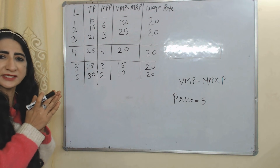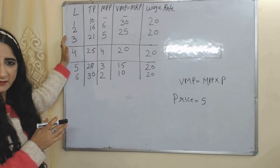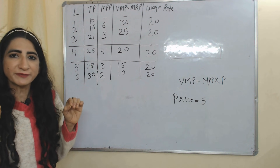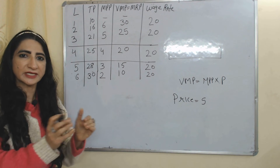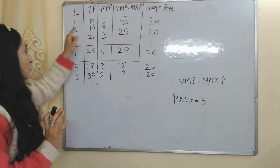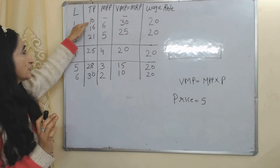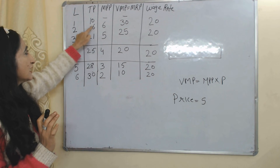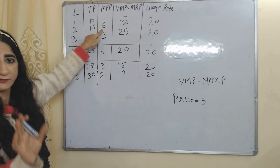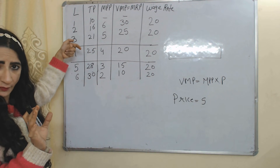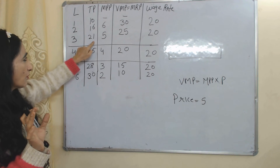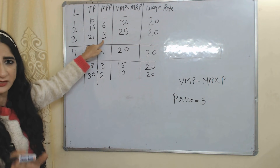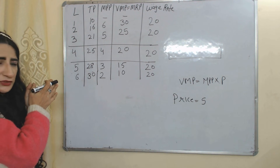Now we understand this theory with the help of a table. The first column has labor, the second column has total product, and the third column has Marginal Physical Product. MPP tells us how much total product increases when we add one more unit of factor. One unit of labor gives output equal to 10, but when we add one more unit, output increases from 10 to 16 — the difference of 6 is called the Marginal Physical Product.